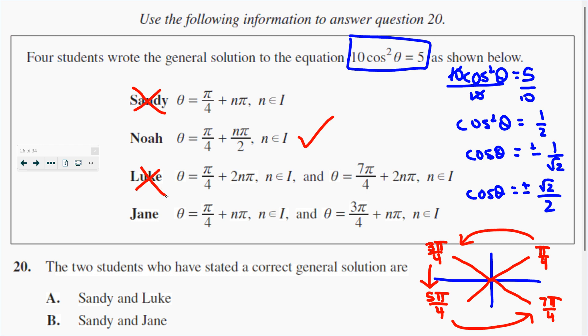So let's hope, fingers crossed, Jane is correct. Jane says pi over 4 plus pi n. So she's going to get pi over 4 and add on pi, and she's going to get here.